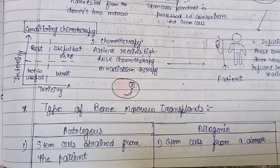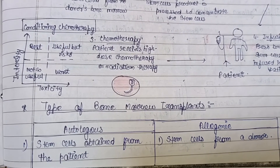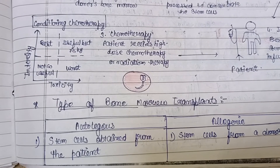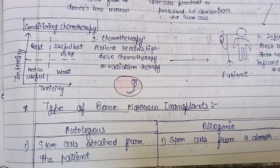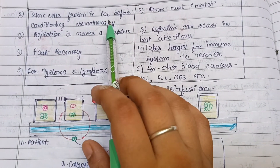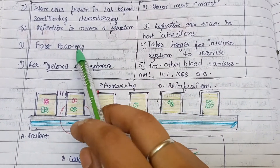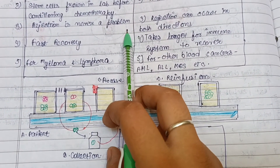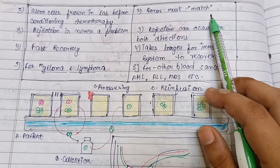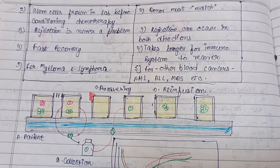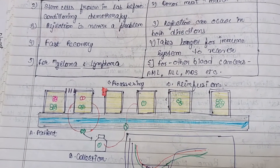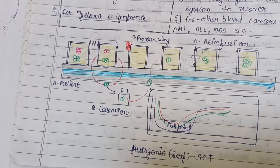There are two types of bone marrow transplants: autologous and allogeneic. In autologous transplantation, stem cells are obtained from the patient themselves — 'auto' means self. Stem cells are frozen in the lab before conditioning chemotherapy; rejection is never a problem, and recovery is faster. This is used for myeloma and lymphoma. In allogeneic transplantation, stem cells are obtained from a donor who must match; rejection can occur in both directions, recovery of the immune system takes longer, and it is used for other blood cancers.